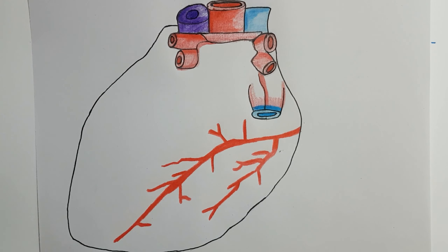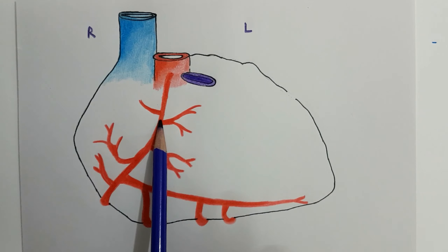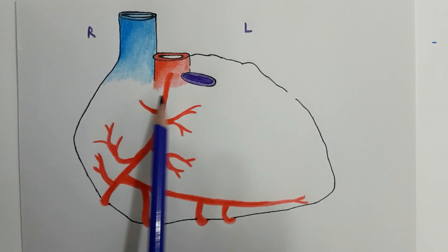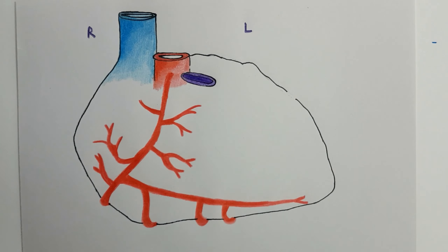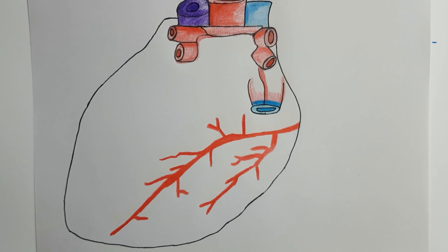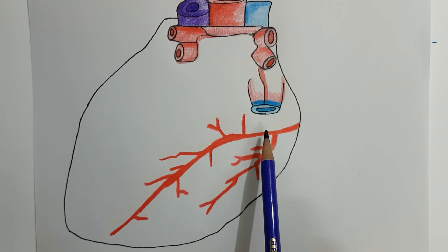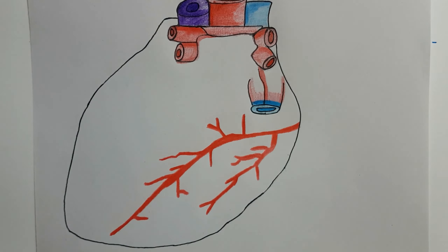To revise the course of the right coronary artery: after its origin from the anterior aortic sinus, it passes forwards between the pulmonary trunk and the right auricle, runs downwards in the right anterior coronary sulcus, and reaches the junction of the right and inferior border of the heart. It then winds around the inferior border, enters the diaphragmatic surface, lies in the right posterior coronary sulcus, reaches the posterior interventricular groove, and finally terminates by anastomizing with the circumflex branch of the left coronary artery at the crux of the heart.